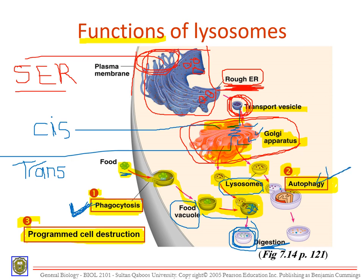The second function is autophagy, which means self-eating or self-destruction — breaking down dead organelles. For example, a mitochondria that has expired and no longer works needs to be broken down and digested. The lysosome binds to the old mitochondria and breaks it down. Digestion of food is called phagocytosis; digestion of unwanted organelles is called autophagy.